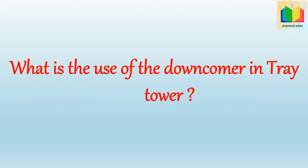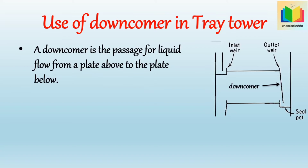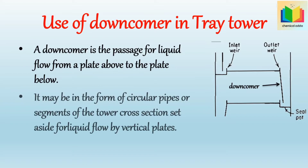What is the use of a downcomer in a tray tower? A downcomer is a passage for liquid flow from a plate above to the plate below. It may be in the form of circular pipes or segments of the tower cross section, made for liquid flow by vertical plates. The discharge end of the downcomer is generally projected far enough into the liquid on a plate to avoid short-circuiting the plate above by gas rising up through the downcomer.